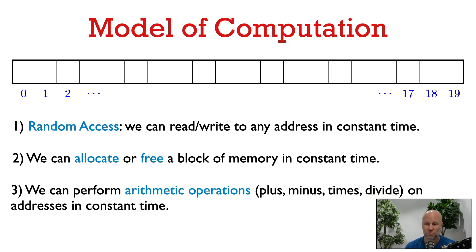We're going to make three assumptions about this model of our computer. The first is that we have random access to the memory. This means that we can read or write to any word in constant time, given its address.